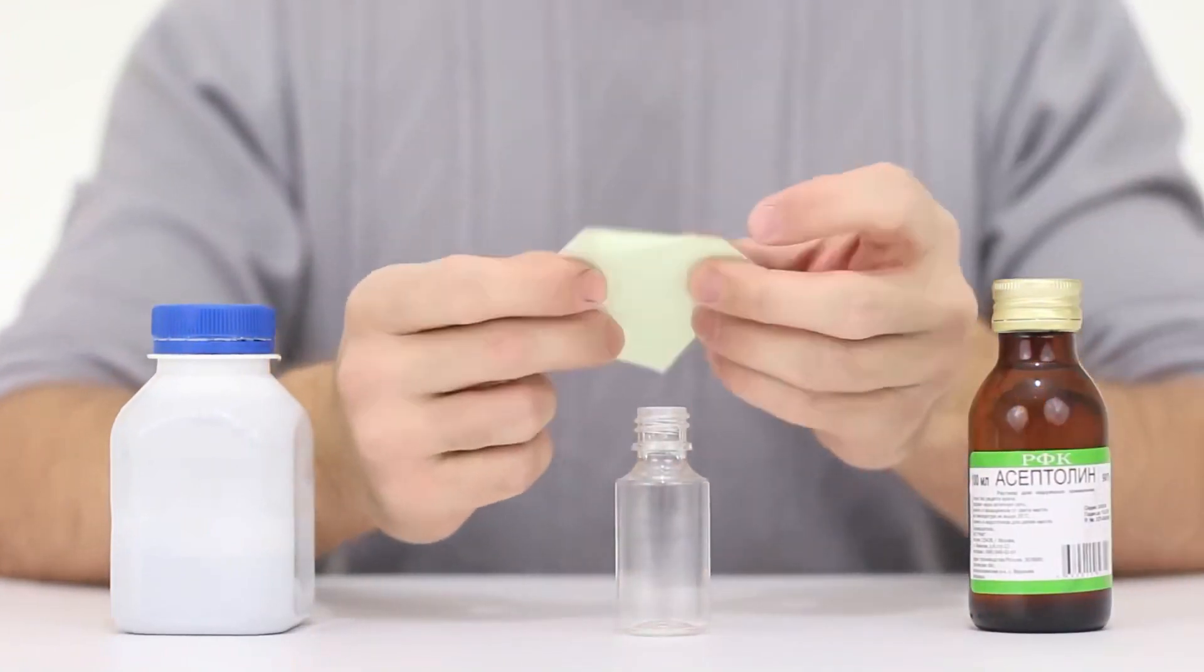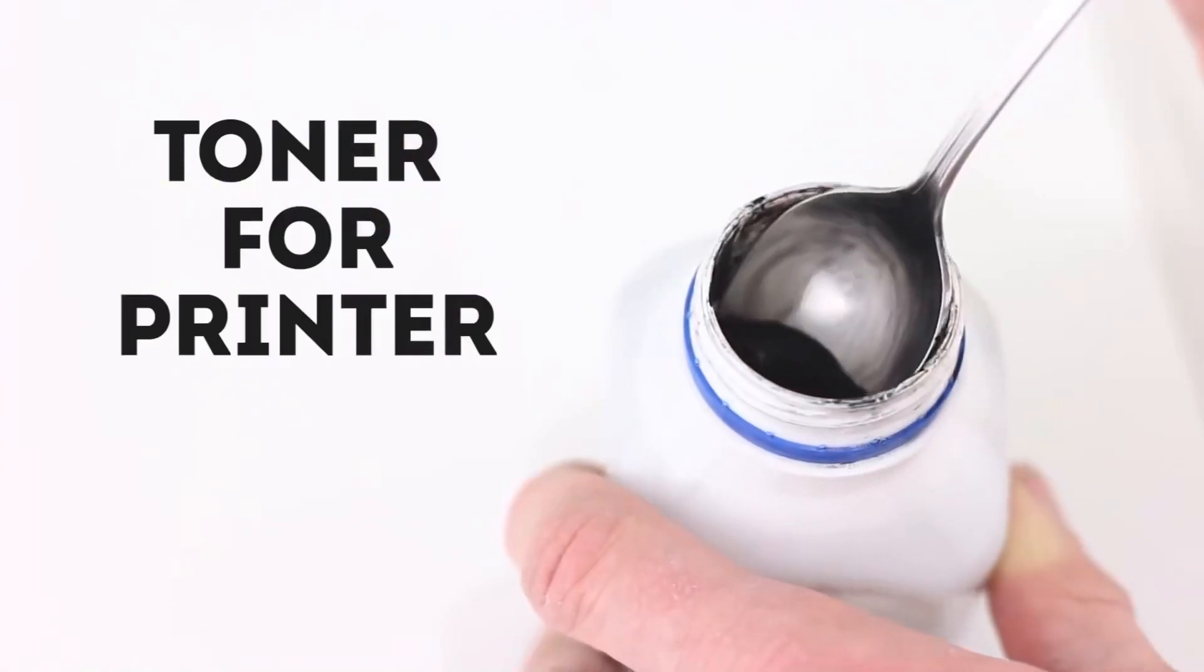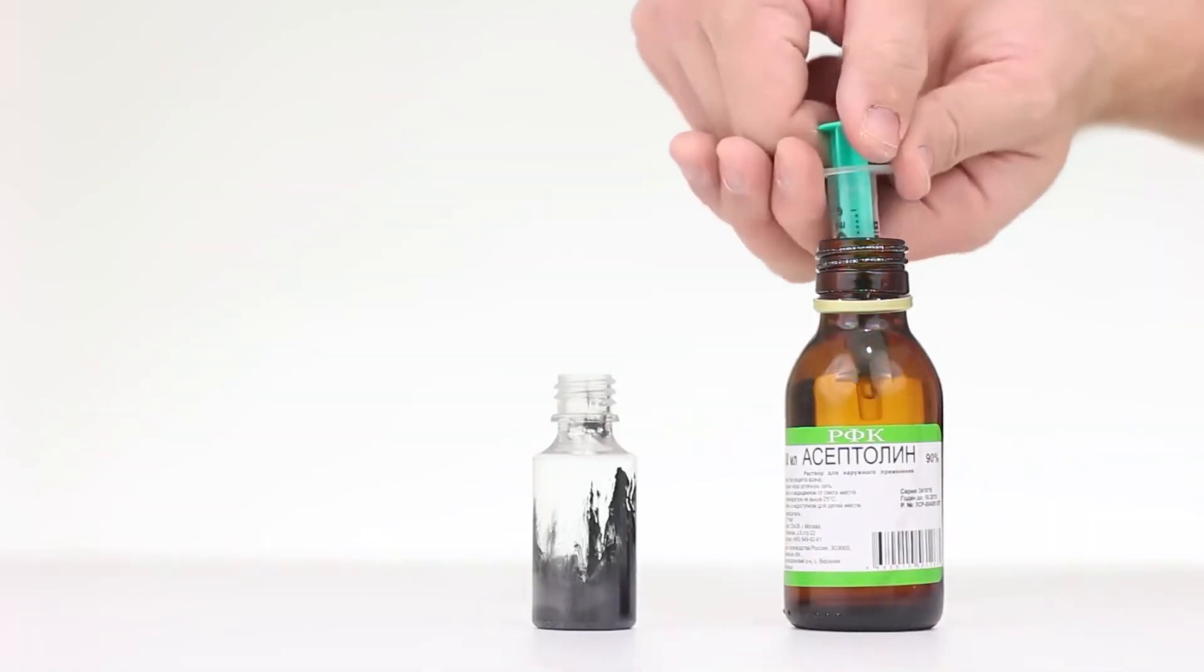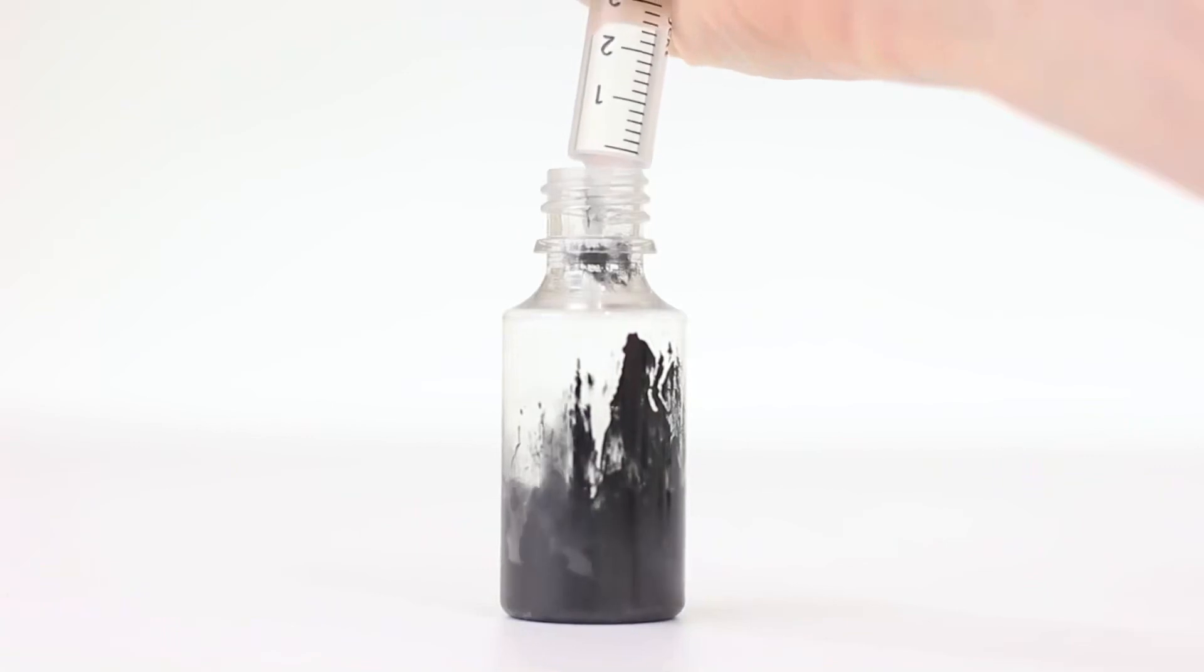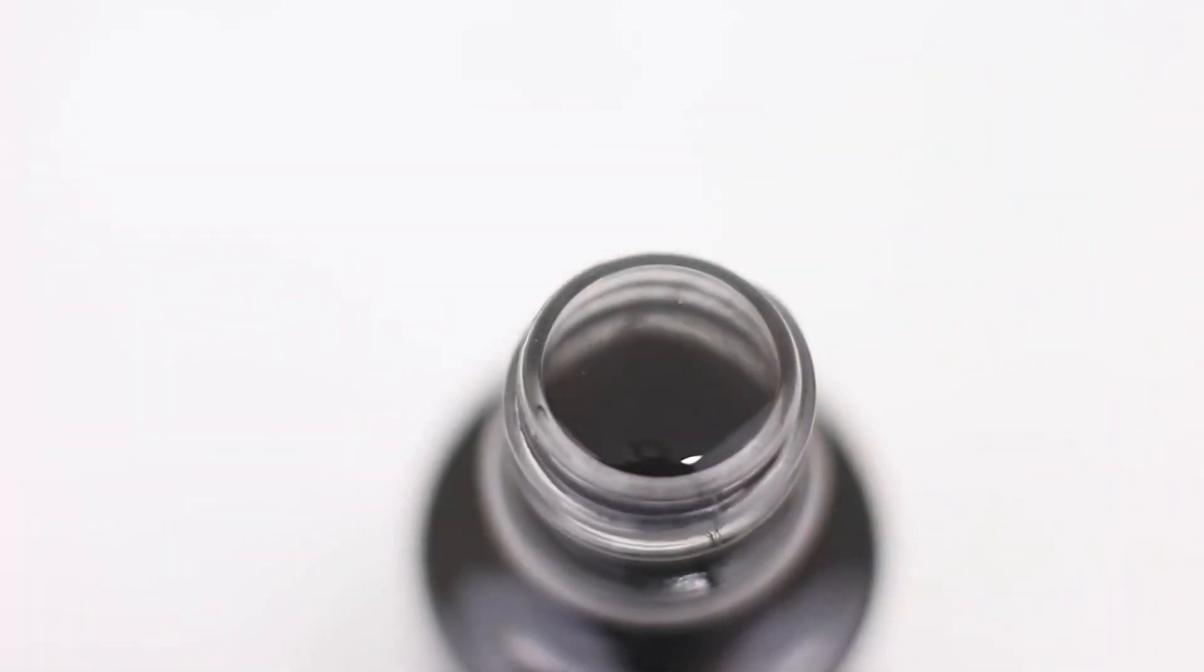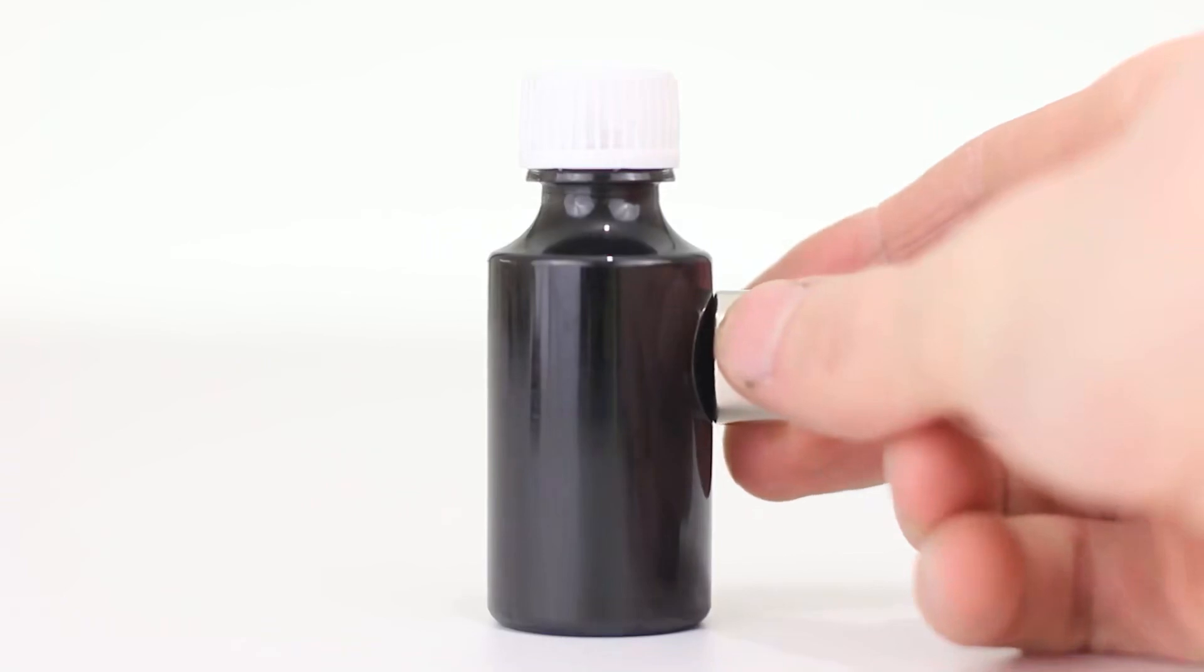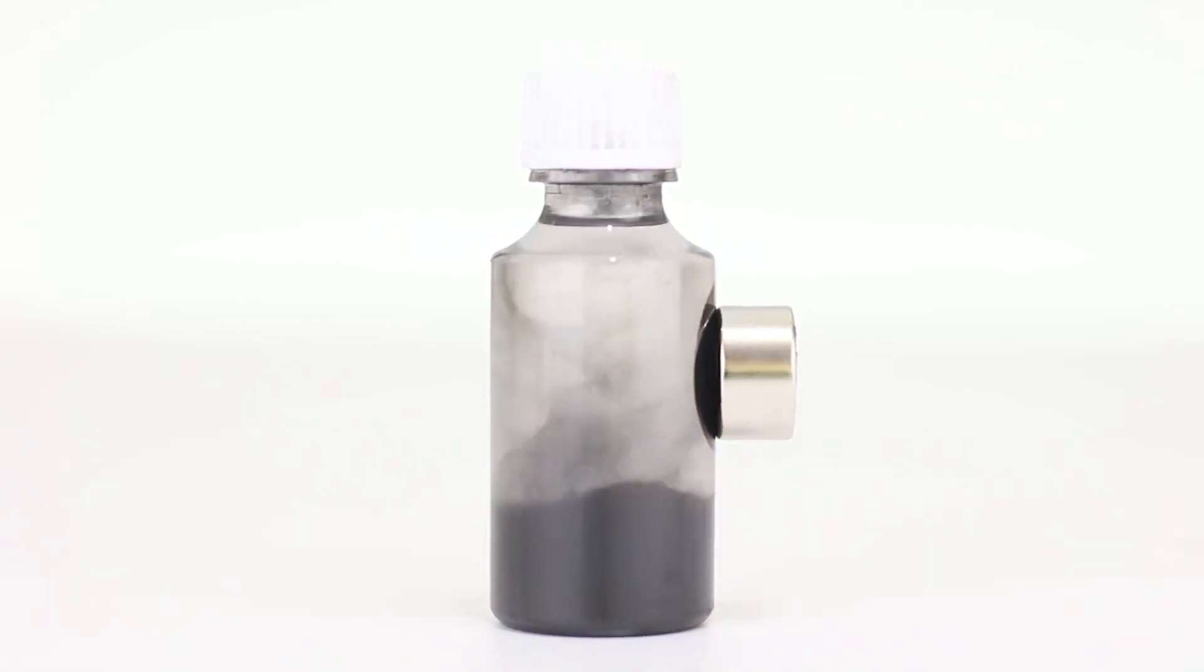Let's take a small plastic bottle, make a funnel out of a piece of paper, and pour some printer ink inside. Using a syringe add alcohol inside until the bottle's filled. Close the lid tightly and now put a magnet to the walls.